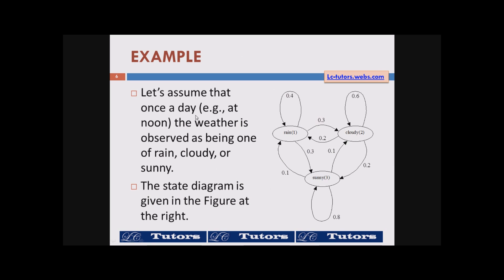Let's take an example here which is a weather model. We have three states here rain, cloudy, sunny. Rain is state 1, cloudy is state 2, sunny is state 3. So let's assume that once a day example at noon the weather is observed as being one of rain, cloudy or sunny. The state diagram is shown and then these are the state transition probabilities. That is if it is a rainy day today what is the probability of next day is also rainy. So it is 0.4. Rainy day next day is cloudy is 0.3. Cloudy day next day is rainy is 0.2. So this is a model that you can create by observation of several days and then come up with a statistical table. And then put this in a diagram form.